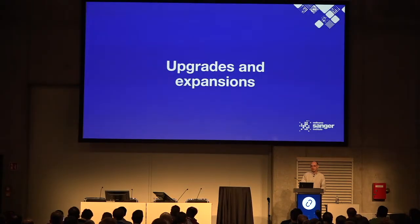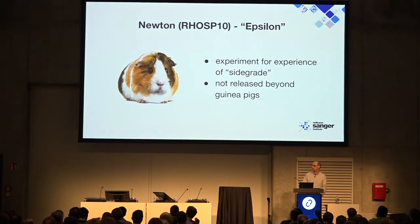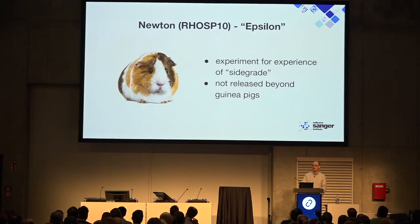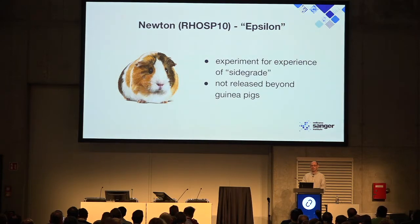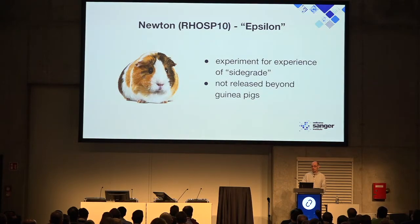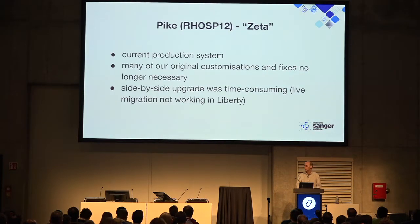We started with 100 compute nodes and grew it. We also upgraded to Newton as a side-by-side version — to see how easy it is to run two separate OpenStacks on one set of network switches and one Ceph. The answer is it's quite easy if you're careful. We only let a few guinea-pig users on that to check we'd built something that works. The current production system is running Pike — that's Red Hat OpenStack 12.